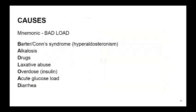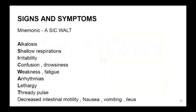A small mnemonic for the causes of hypokalemia: BAD LOAD. B for Bartter or Conn syndrome (otherwise called hyperaldosteronism), A for alkalosis, B for drugs, L for laxative abuse, O for overdose of insulin, A for acute glucose load, and D for diarrhea.